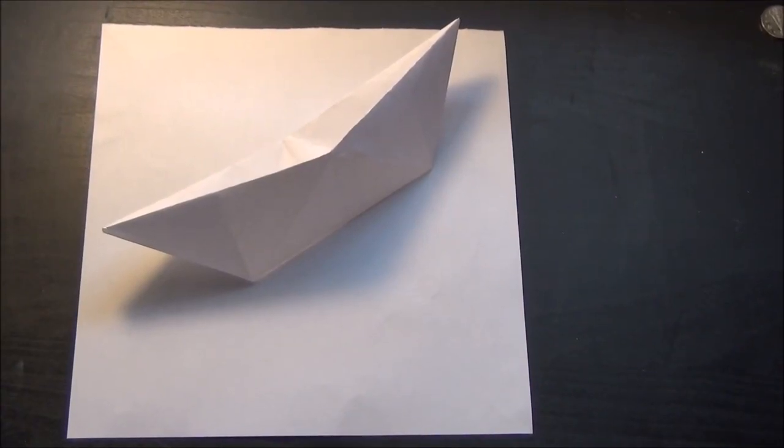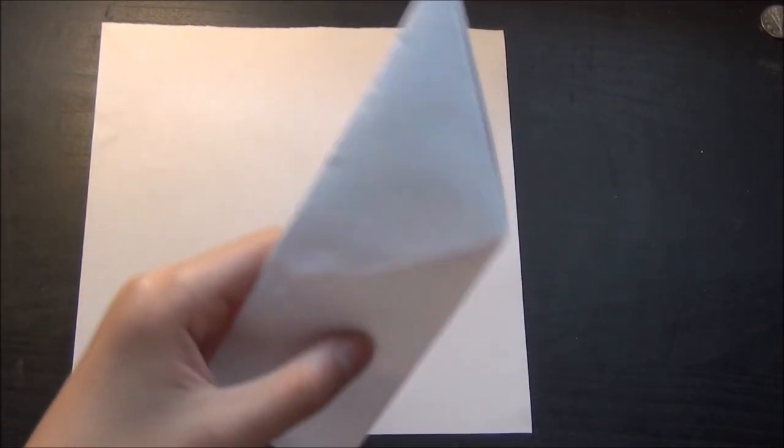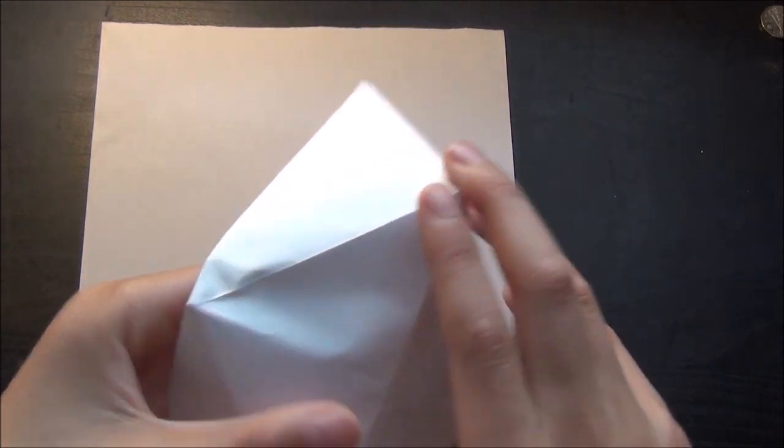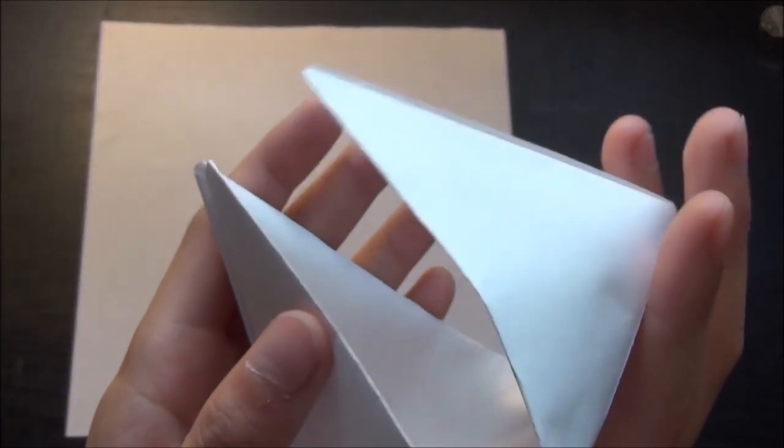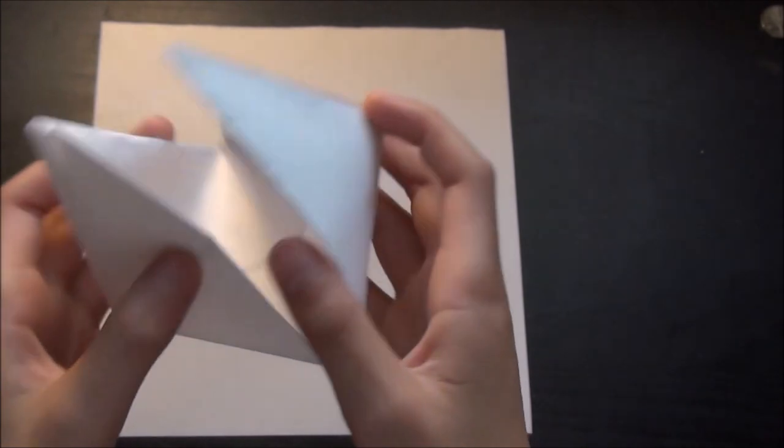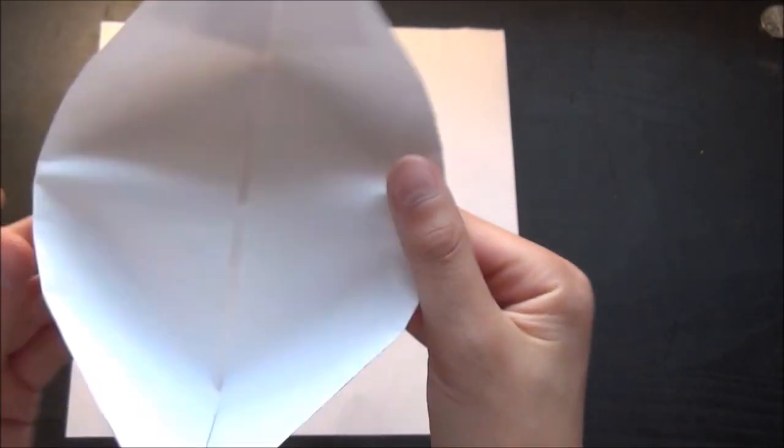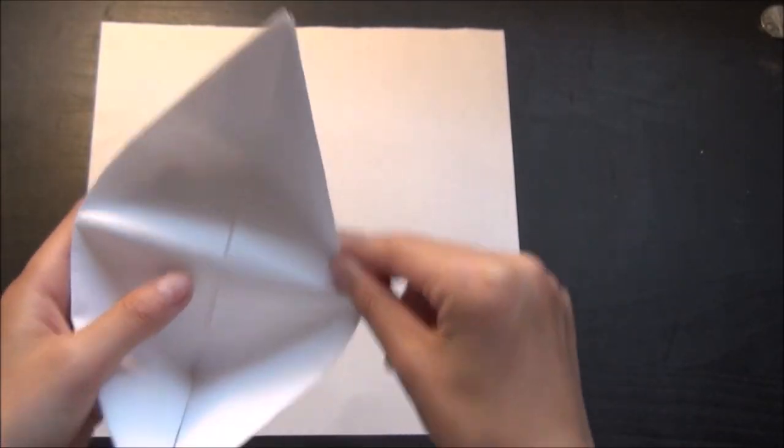Hi guys, today I'll be showing you how to make the transforming canoe. This canoe can transform into many things such as a paper snapper and a phone stand to hold up your phone when you're watching something.